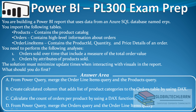In this video we will practice an order-related transition data case that was asked in one of the Power BI exams. The question is: you are building a Power BI report that uses data from an Azure SQL database named ERP1. You import the following tables: Products, which contains product catalog details; Orders, which contains high-level information about orders; and Order Line Items, which contains product ID, quantity, and price details of an order. You need to perform the following analysis: orders sold over time, including a measure of total order value, and orders by attributes of product sold. The solution must minimize update time when interacting with visuals in the report. What should you do first?